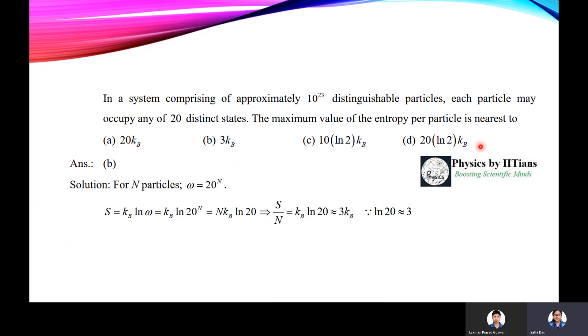So what is the answer? First of all, I have made several statistical mechanics videos and all the concepts have been covered there. Please watch those videos - the playlist link has been shared in our description box. The question states 10 to the power 23 distinguishable particles. So suppose there are N particles, the number of microstates is 20 to the power N, because the number of states are 20.